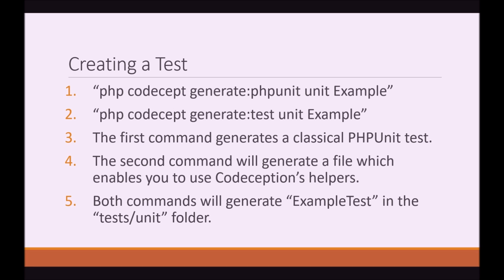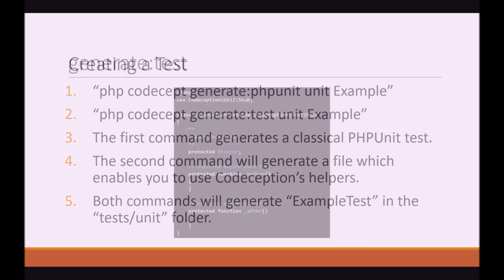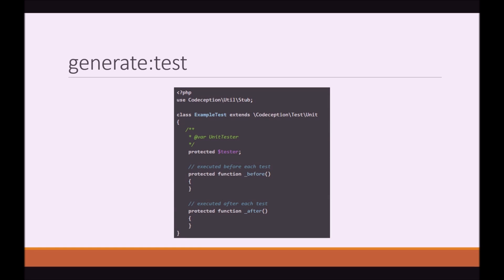Creating a test — the first two points in this slide are commands. The first command generates a classical PHPUnit test. The second command will generate a file which enables you to use Codeception's helpers. Both commands will generate an example test in the tests unit folder. Here is an example of what the Codeception aided test will look like.